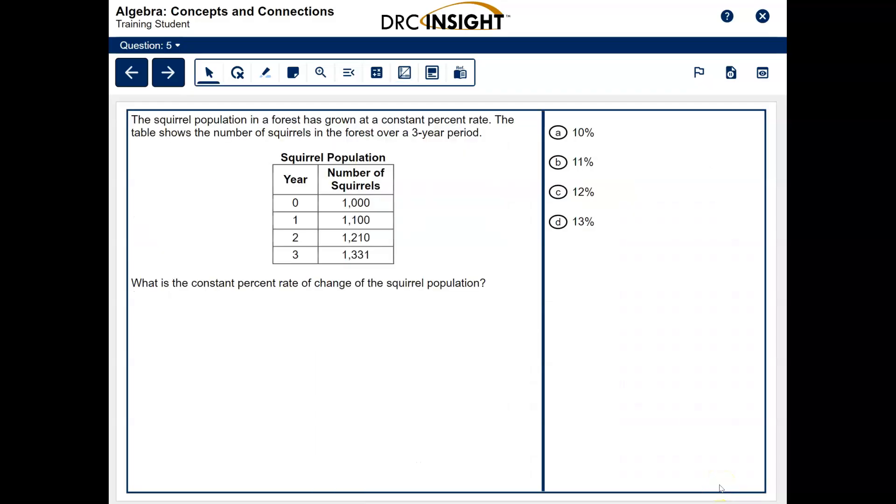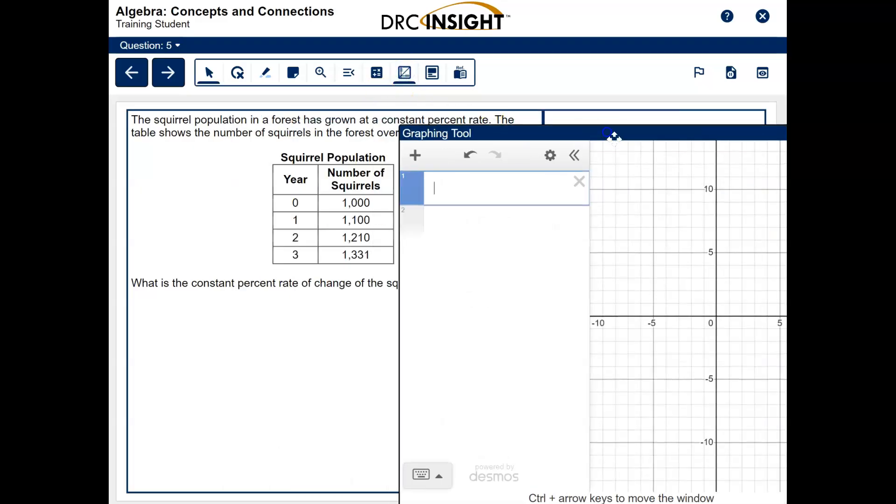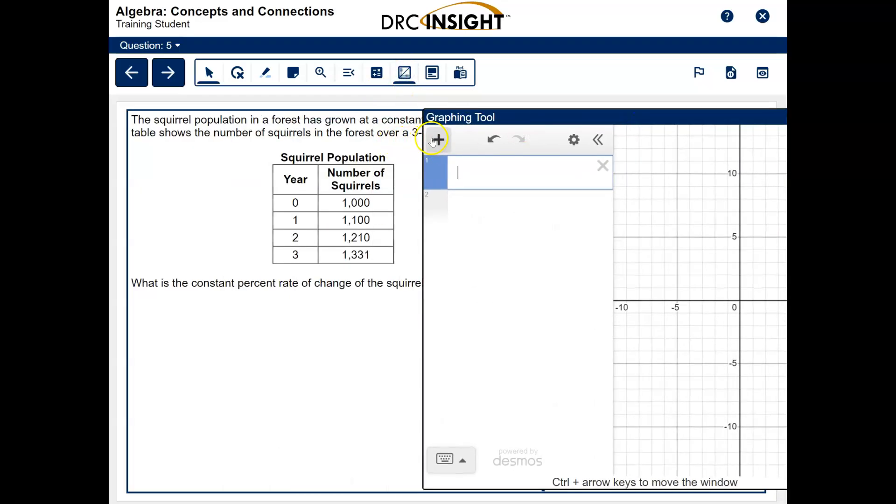The next question we're looking at is question number 5. This is a table with some data, and we are asked to find the constant percent rate of change. So we're going to use the calculator again. Let's go ahead and click on the plus sign, and let's click on table. And we're going to add this table.